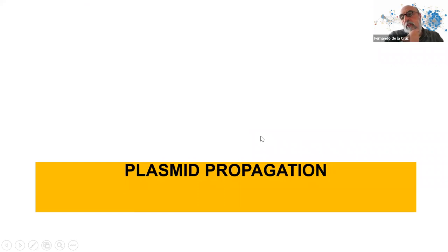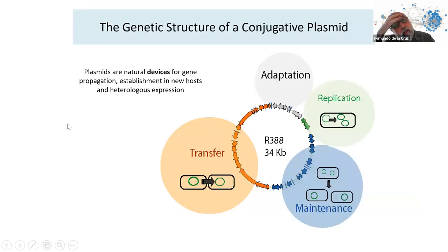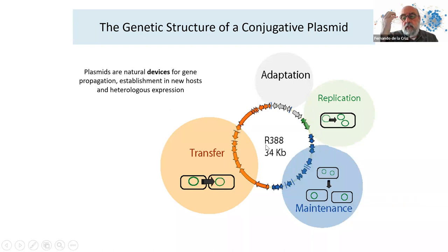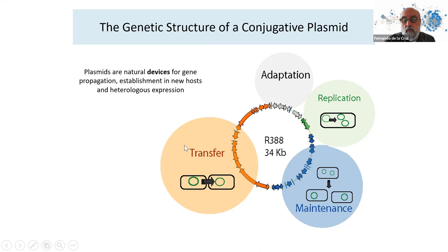I will talk first about plasmid propagation — how plasmids move from one strain to another. Here is a conceptual slide on the genetic structure of a conjugative plasmid. For instance, R388, the plasmid we work with, is 34 kb, of which about half — roughly 15 genes — are dedicated to transfer and the conjugative machinery.